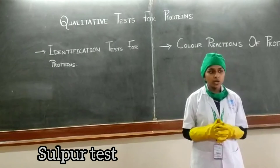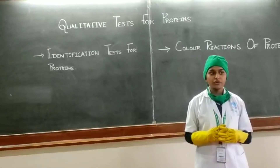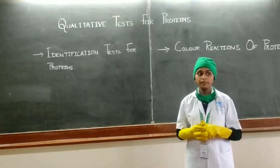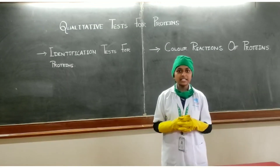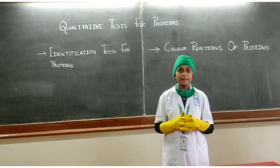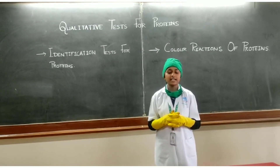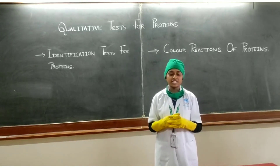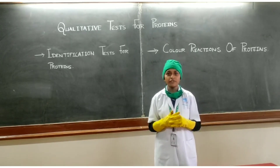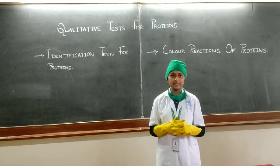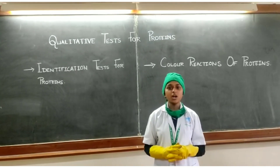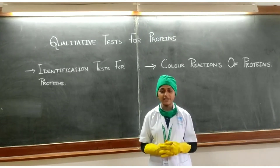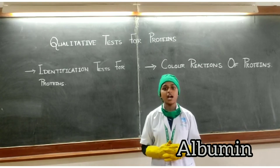Sulfur test: 2 ml of sample plus 2 ml of 40% NaOH solution. By performing the complete qualitative test for the B1 sample, it is confirmed that it contains aromatic amino acids, arginine, tryptophan, and sulfur-containing amino acids. By performing all the validating tests for the protein, it is confirmed that the B1 sample is albumin.